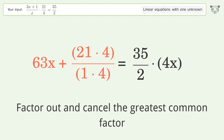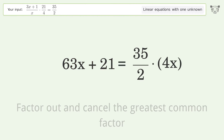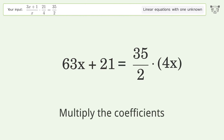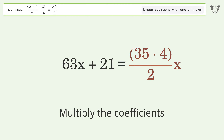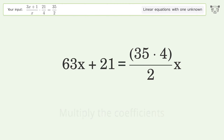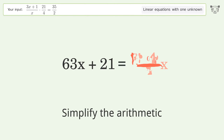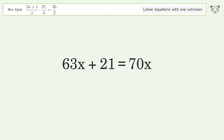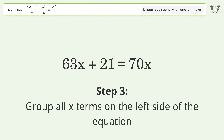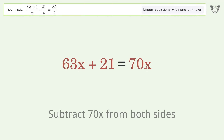Factor out and cancel the greatest common factor. Multiply the coefficients. Simplify the arithmetic. Group all x terms on the left side of the equation — subtract 70x from both sides.